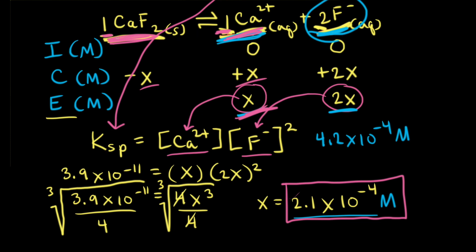Technically, at a constant temperature of 25 degrees, the concentration of a solid doesn't change, so most textbooks don't put in minus X on the ICE table. I like to include it though, as a reminder that X in this case refers to the molar solubility.